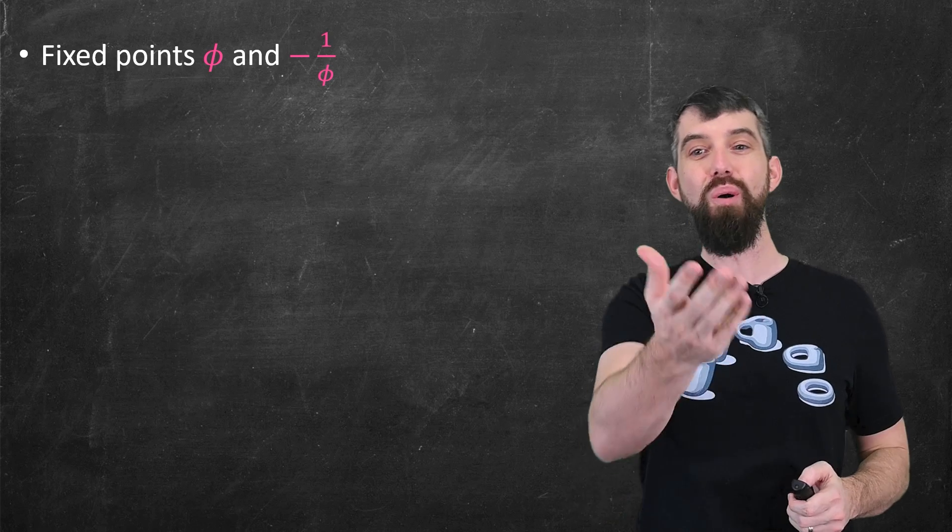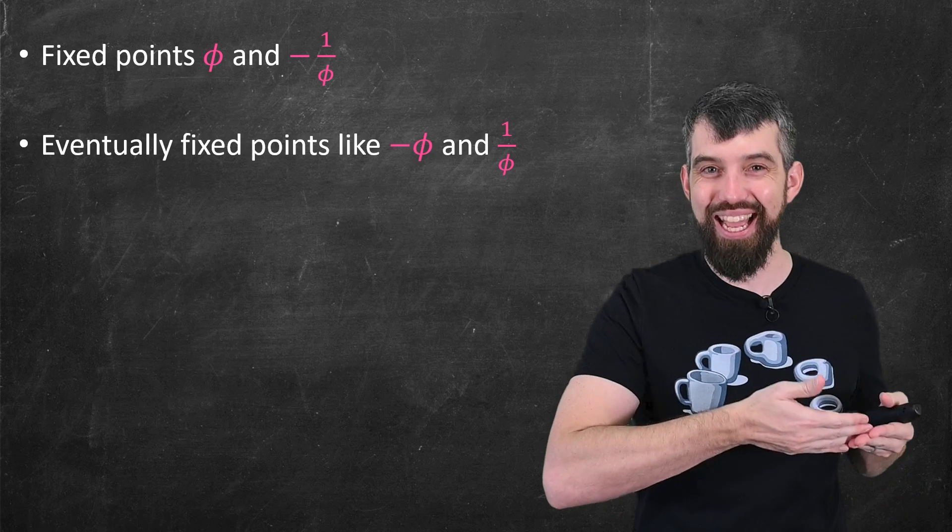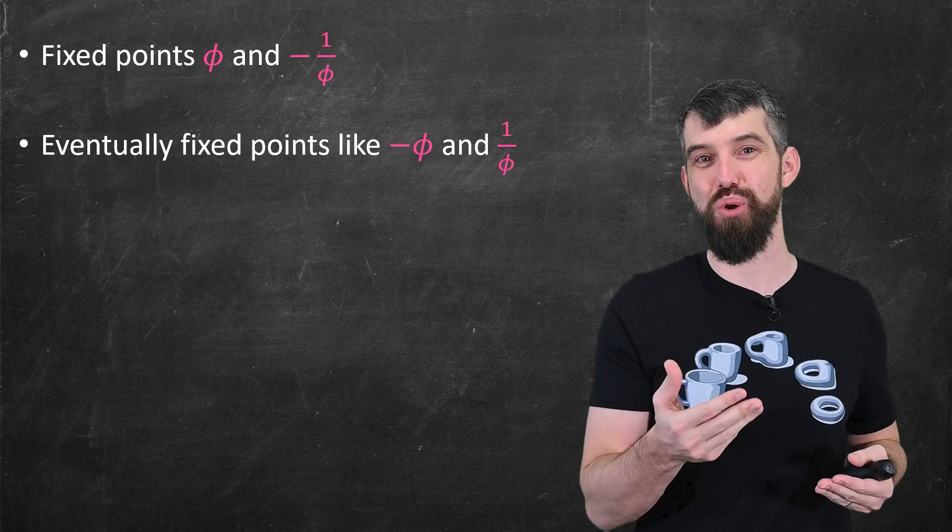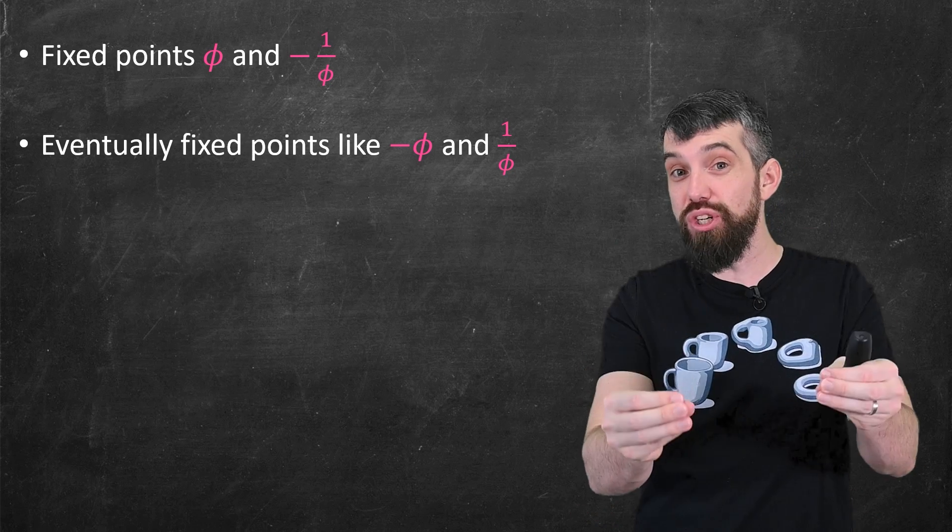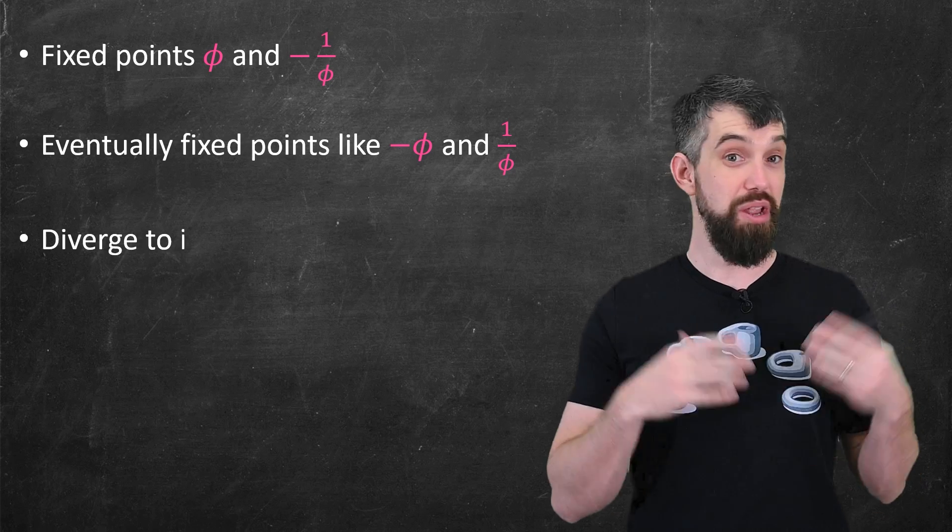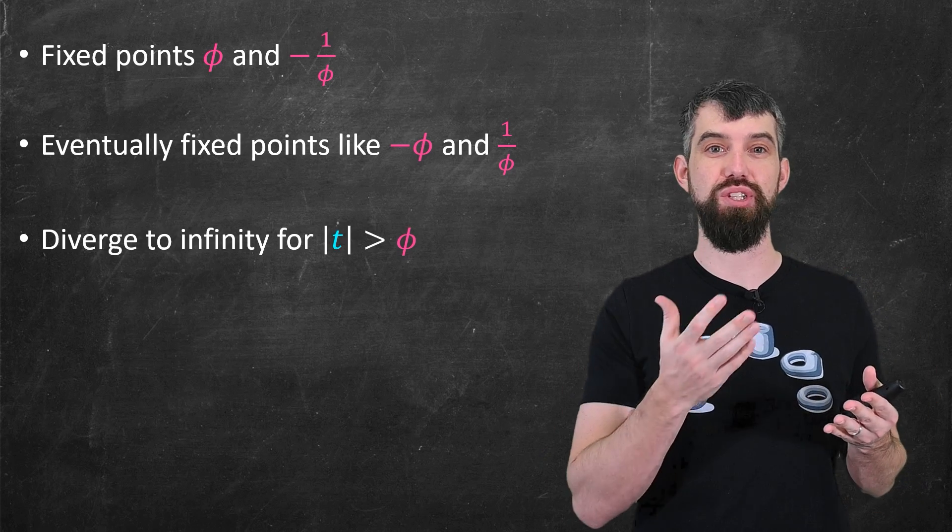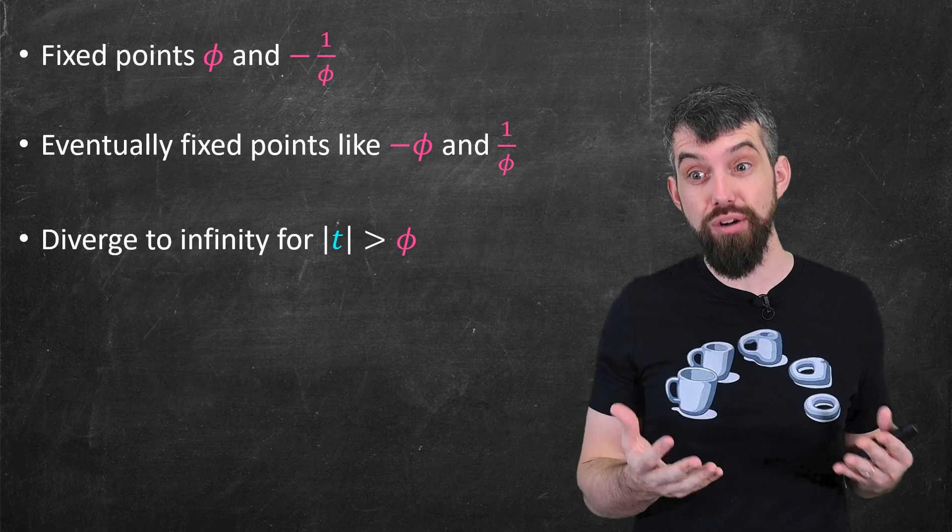Then we have all of those infinitely many points, like the negative of the golden ratio and 1 over the golden ratio, all of those points where they will eventually become fixed points.